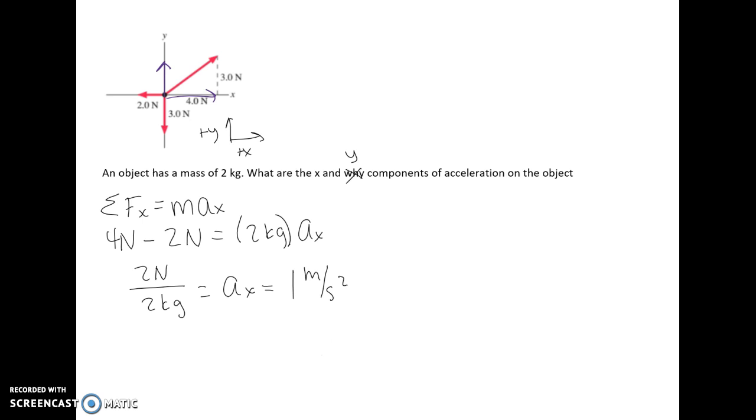That simplifies to meters per second squared, and we can see that because one newton is equal to a kilogram times meters per second squared. We got a positive value, which here would mean in the rightward direction.